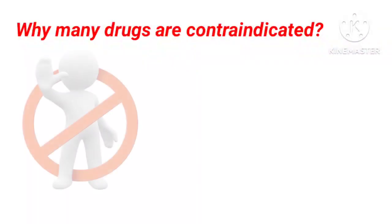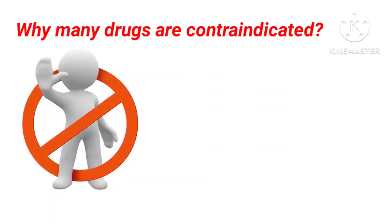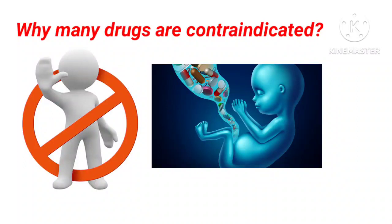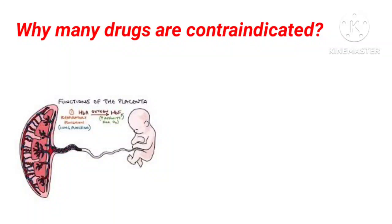Now let's first discuss how many drugs are contraindicated and why. The major problem behind contraindication is that some drugs easily pass through the placenta. You can observe the tubular structure on the board — that is the placenta. It is a membrane whose main function is to prevent the direct entry of substances — it prevents direct mixing of the mother's blood into the fetal circulation.